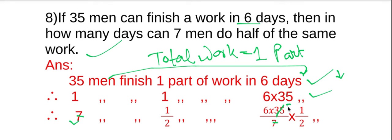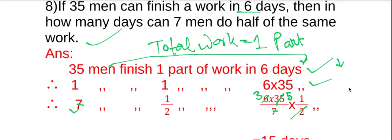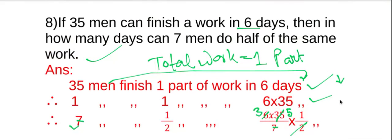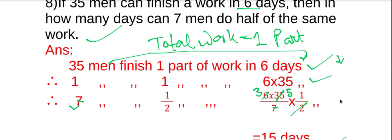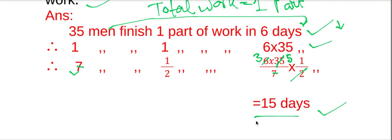Simplifying: 35 divided by 7 is 5, and 6 divided by 2 is 3. So 3 times 5 equals 15. The answer is 15 days. Thank you.